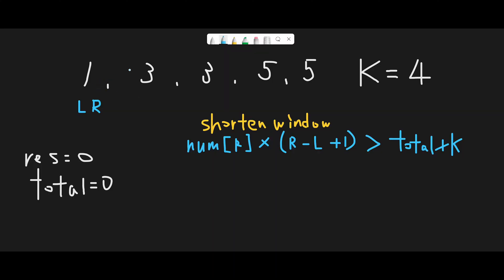Let me explain with this example: [1, 3, 3, 5, 5] and k equal 4. I already sorted the input array. I believe we can sort the input array since there are no constraints such as subsequence or adjacent rules. There are a few variables: a left pointer and a right pointer both initialized to zero, a result variable initialized to zero as the return value, and a current total variable.